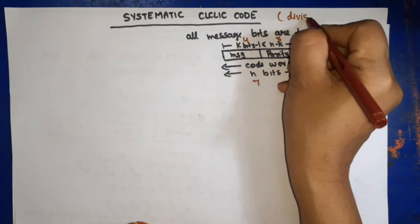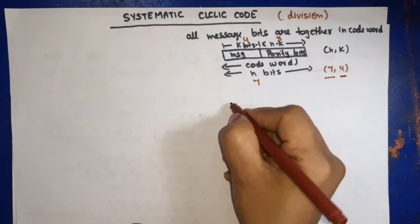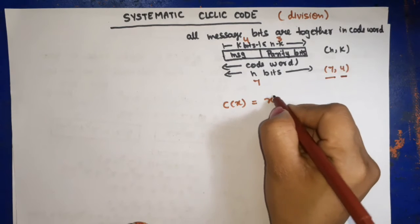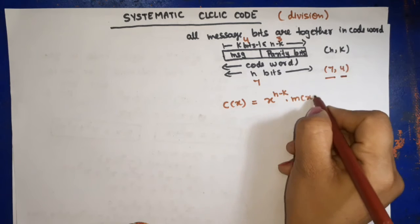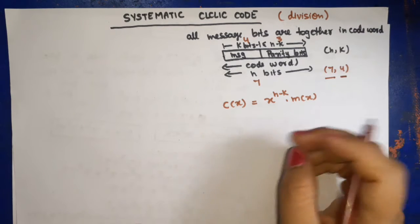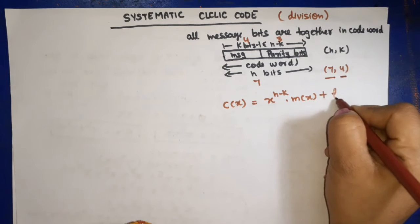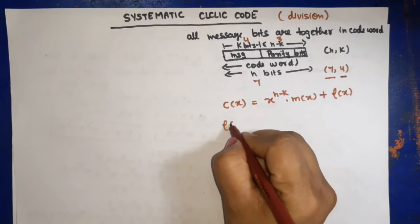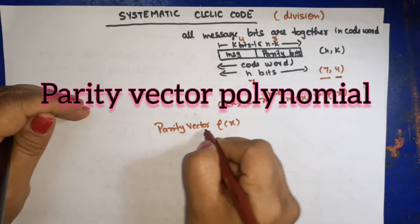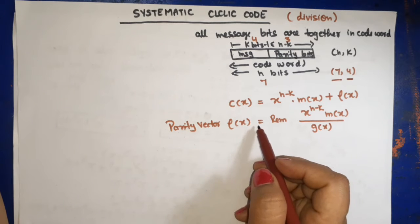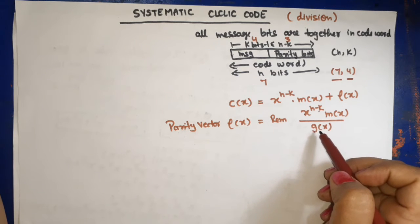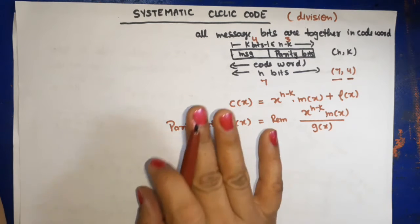In the systematic case we use the division method. In systematic cyclic code, C(x), the code word polynomial, is given by: C(x) = x^(n−k) · m(x) + ρ(x), where m(x) is the message polynomial. ρ(x) is the parity vector, equal to the remainder of x^(n−k) · m(x) divided by g(x), where g(x) is the generator polynomial. This equation was derived in the previous video.